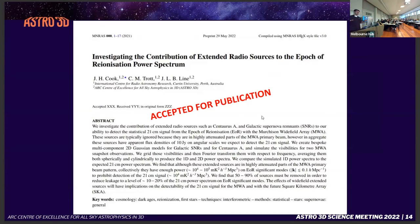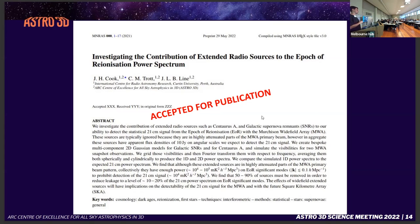In conclusion: Centaurus A needs to be mitigated or subtracted entirely from the data to reduce its contamination, and you need to subtract at least 50% or more of the supernova remnants in order to reduce your overall contamination. Thank you.